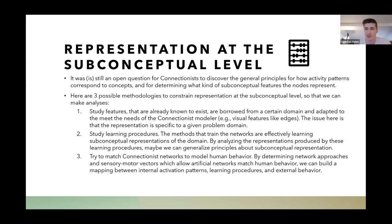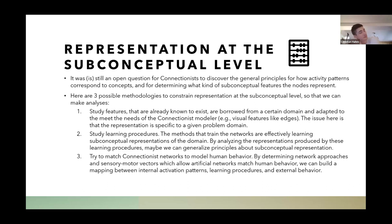It's still an open question how activity corresponds to concepts. The author gives some ways to constrain representations and study this — for example, studying features from certain domains. Convolutional neural networks would be a good place to look for vision. There are papers, and in the TruePal project they actually looked at what was happening in a node and mapped it back to a visual activation, seeing that a node activates in the presence of a certain feature like fur, a tire, or a car. You could also study learning procedures and try to generalize principles, or accurately model the human brain to draw conclusions.